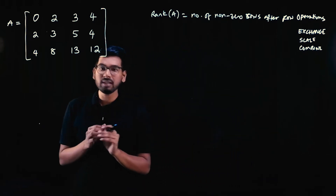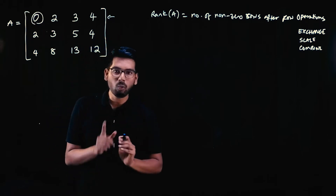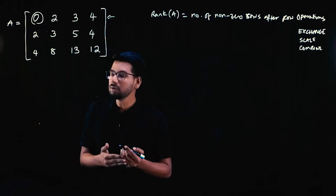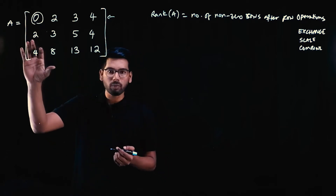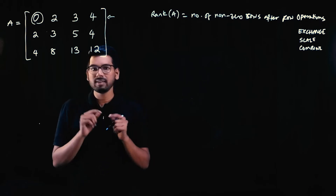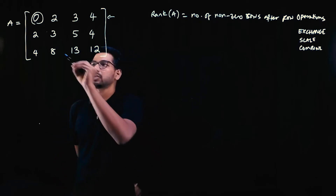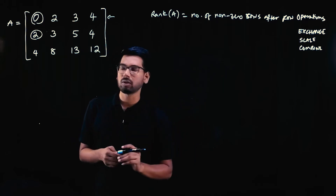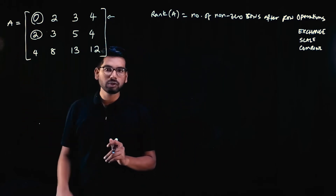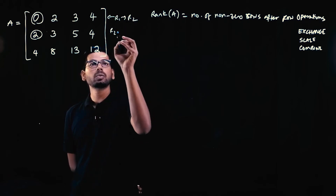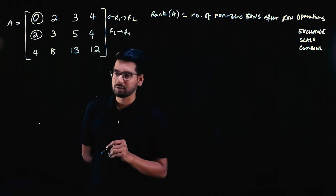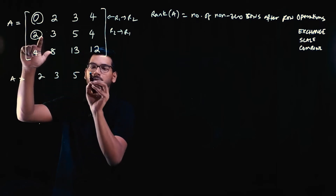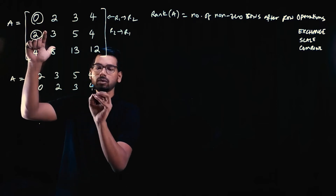The procedure always starts by making the first element of the first row equal to one, then using that to make the elements below it zero. Since the first element is not one here, and we have a zero in the first position of row one, we use the row exchange operation — row one becomes row two and row two becomes row one. After this, the matrix has first row: 3 2 3 5 4, second row: 0 2 3 4, and third row: 4 8 13 12.